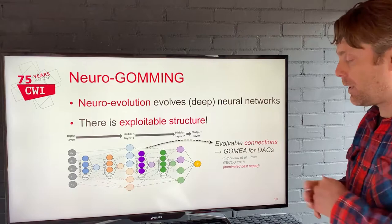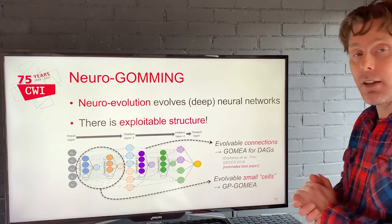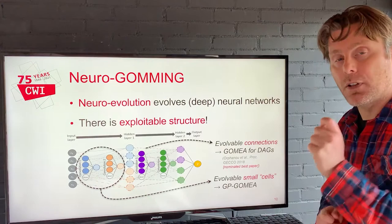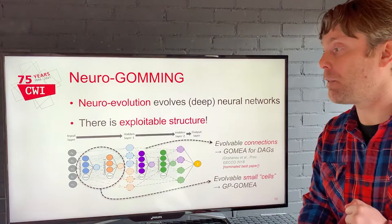That's something we can do also for deep neural networks. And also, these modules you can actually evolve separately with GP-GOMEA, which is a genetic programming variant of GOMEA. You can evolve small cells — little modules — and then combine them using machine learning techniques to tell you what are probably the best combinations.